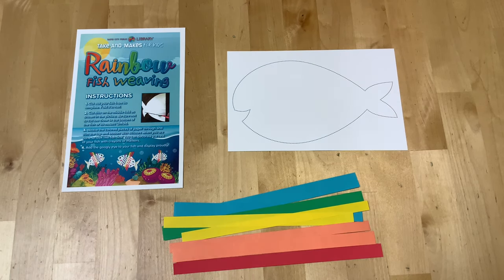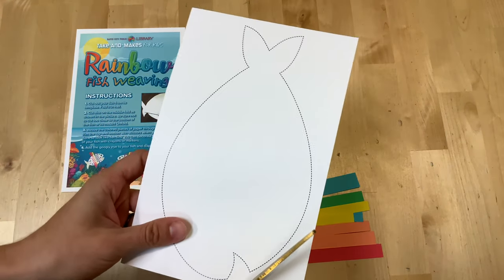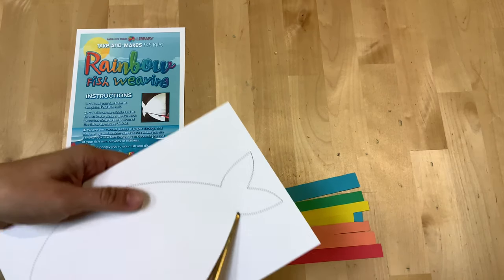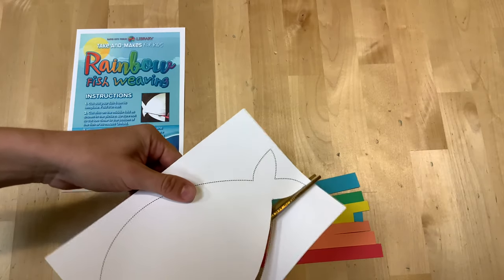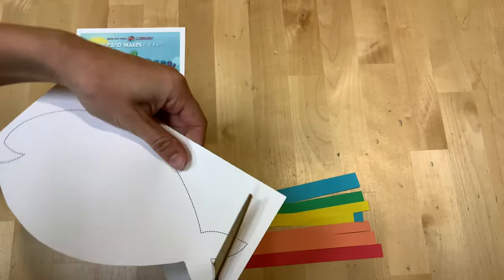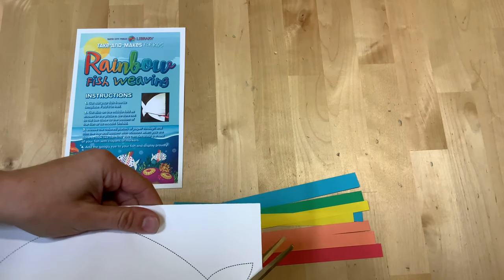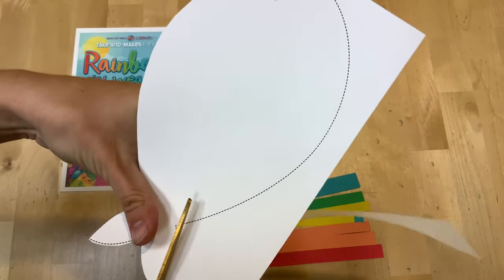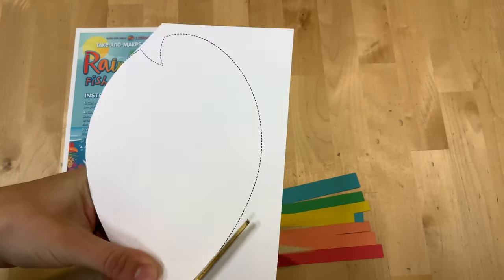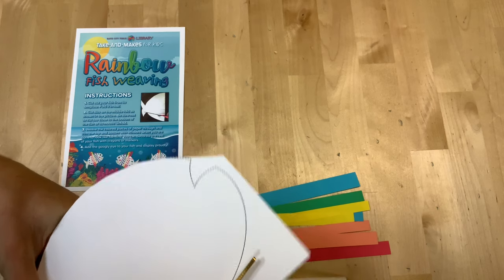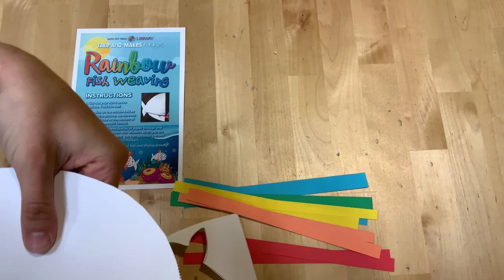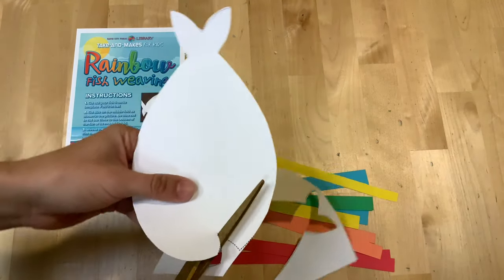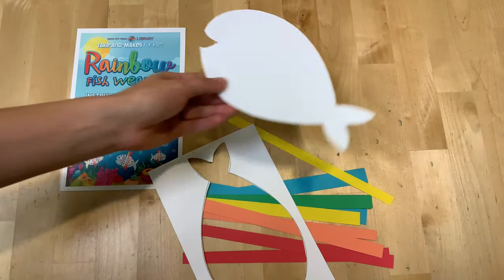Our first step is to cut out your fish from its template. So let's cut out our fish very carefully. You can ask an adult for help with this one if you need. And it doesn't have to be perfect. It's okay if we make a little bit of mistakes while we're cutting out our fish. We'll cut out his mouth for his smile. There we go.